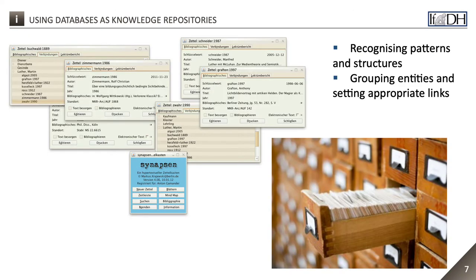As we have seen, the core of creating a database is to structure the world in order to better understand its parts. To find such superordinate categories requires the ability to perceive and name patterns and structures. It is important to group entities, to recognize relationships between them and to make appropriate links. In this way, the database fulfills the basic need of all scientific research, including research in the humanities. In the following, we will discuss the special features of the database as a storage medium and what is necessary to be able to use databases as knowledge repositories.